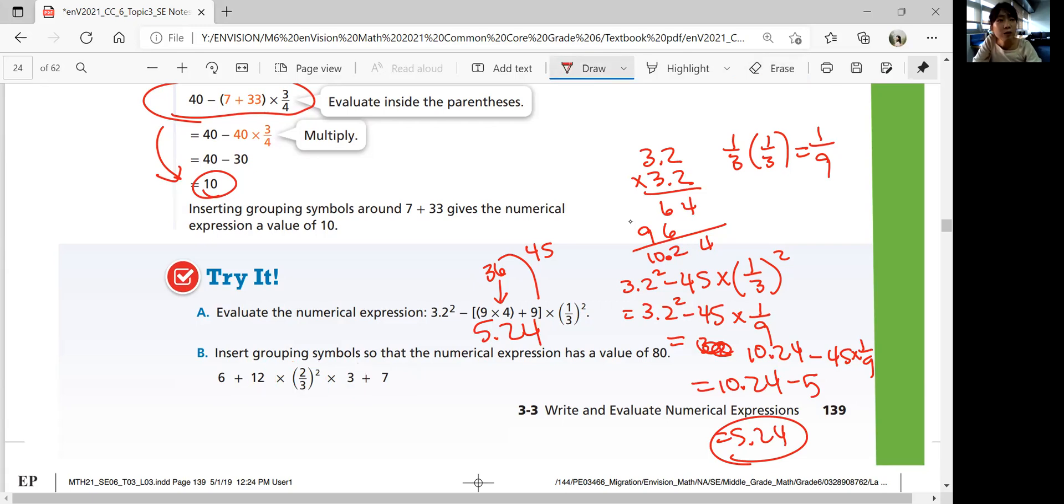And 6 plus 12 first. You need to put two parentheses. And then multiplying all these numbers. And after the powers, you get 80. So 6 plus 12 is 18 times 2 third to the second power. Is that square? Yes.